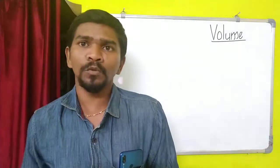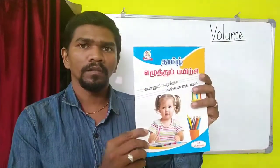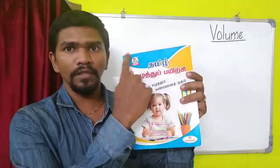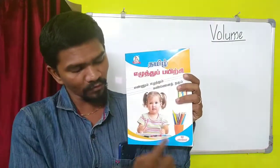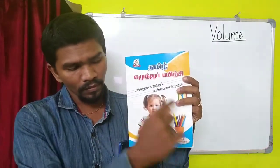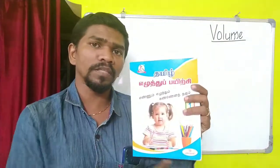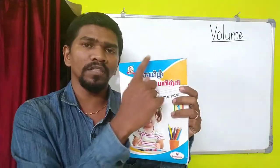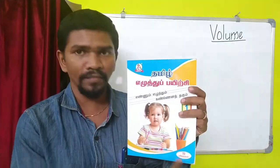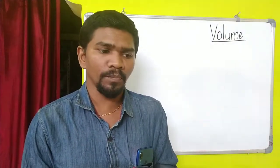Before moving to the problem, you should understand what volume is. First I'm showing a shape — it is a rectangle, having a breadth and a length. The breadth is smaller than the length. For this we find area using length into breadth, so it is two dimensional — it has a length and a breadth. But volume is a three dimensional shape.